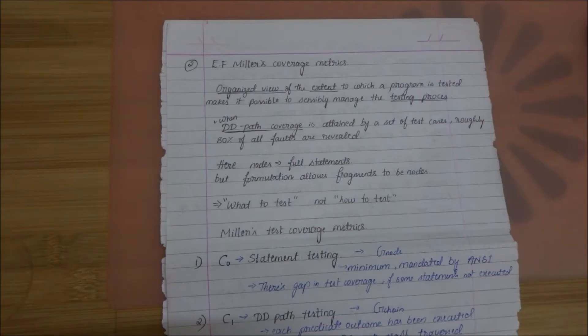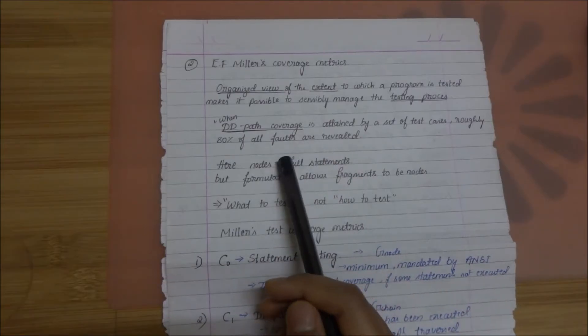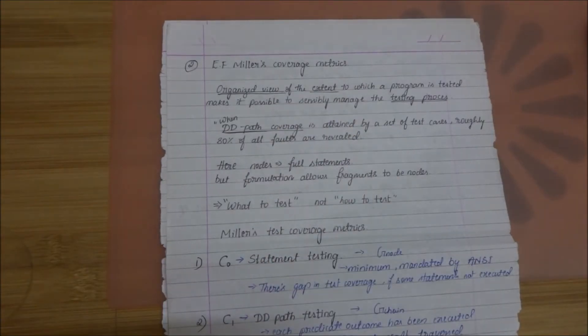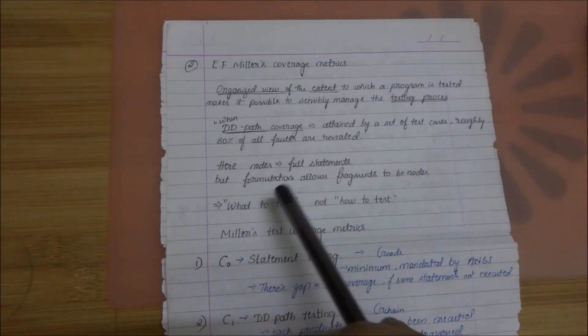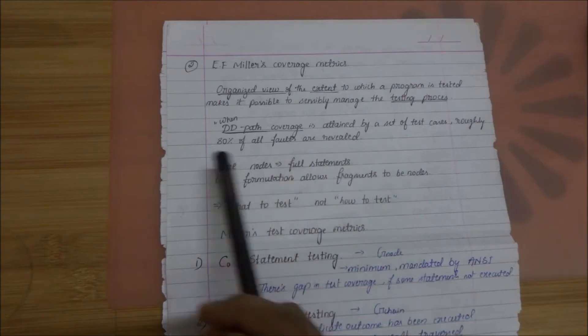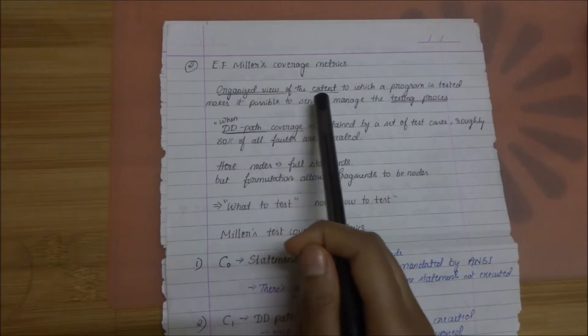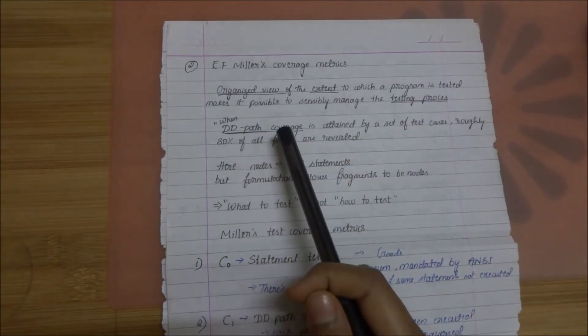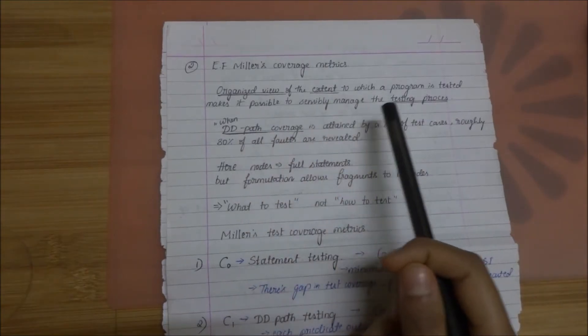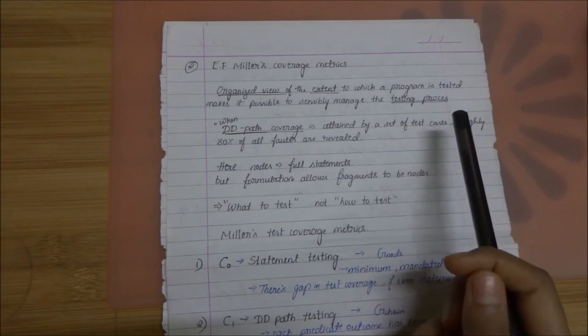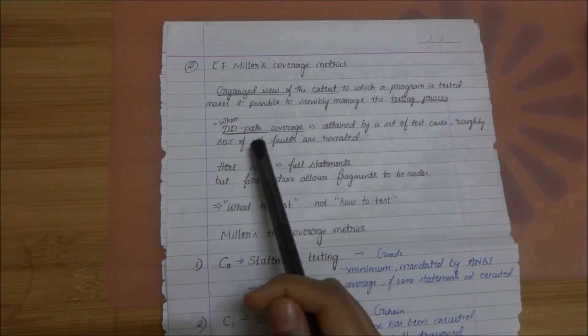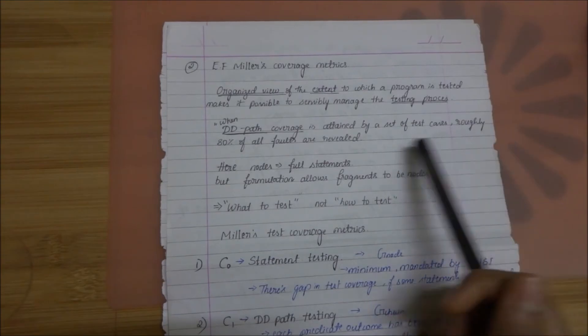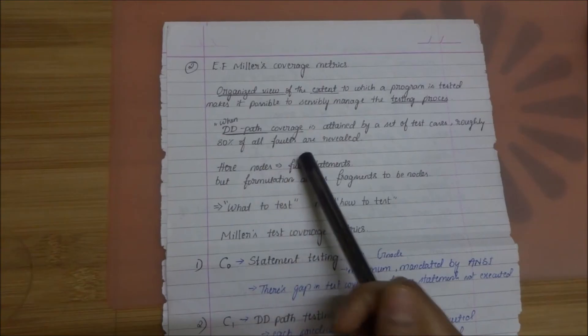That was about program graph based. Now we have the next approach. It's called EF Miller's coverage matrix. This one is more organized than the previous one. It's told that organized view of the extent to which a program is tested makes it possible to sensibly manage the testing process. It's also noted that when DD Path coverage is attained by a set of test cases roughly 80% of the faults are revealed.